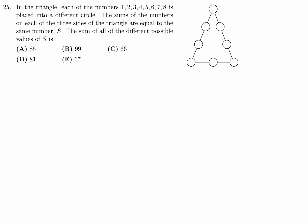In the triangle, each of the numbers 1 through 8 is placed into a different circle. The sums of the numbers on each of the three sides of the triangle are equal to the same number S. The sum of all of the different possible values of S is. I'm going to label this now A, B, W, B, and then Z, C, X, Y. A, B, C purposely chose as the vertices.